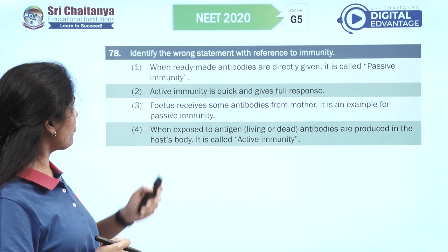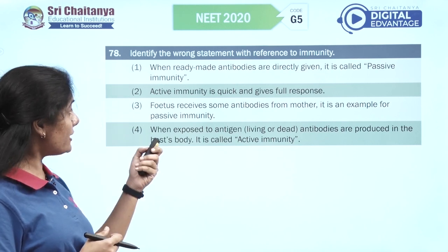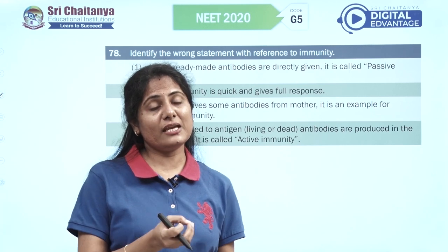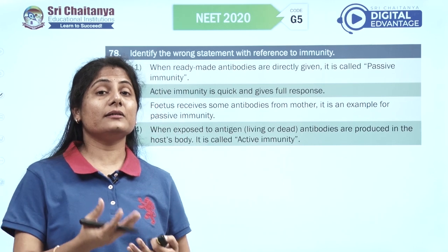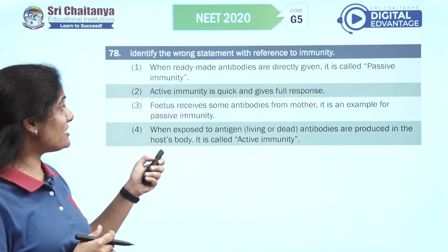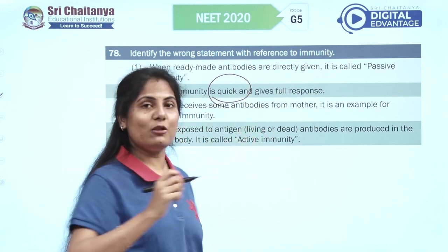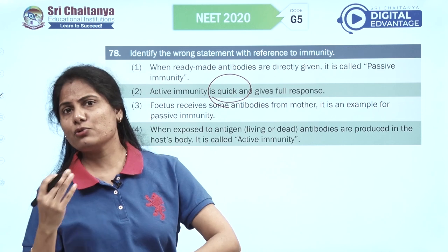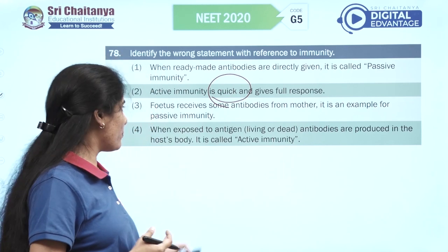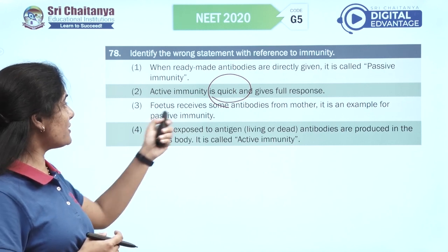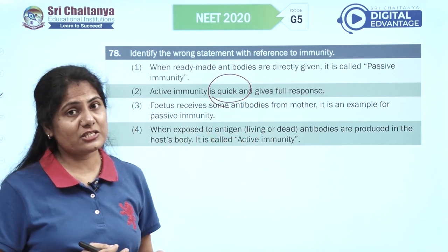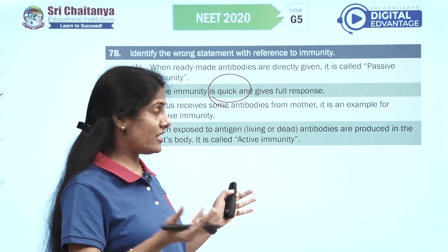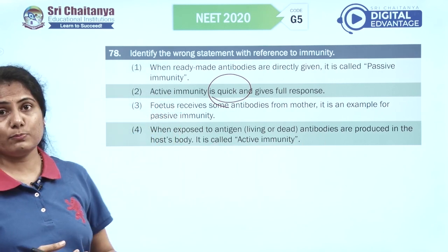Identify the wrong statement with reference to immunity. When ready-made antibodies are directly given it is called passive immunity — that's a right statement. Active immunity is quick — this is wrong: active immunity is not quick, it stimulates your immune responses to make antibodies, it's not a quick process. Fetus receiving antibodies from mother is an example of passive immunity — that's right. When exposed to antigen, antibodies are produced in the host — that's active immunity. So option two is wrong.